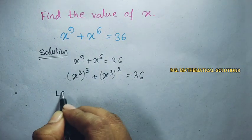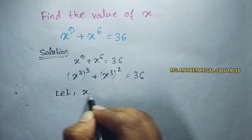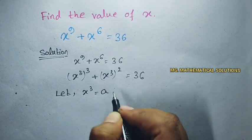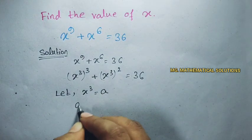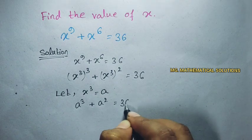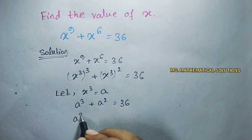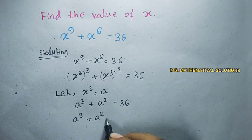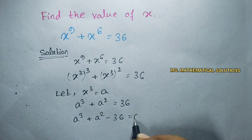Now let x cube equal to a. So the equation becomes a cube plus a square equal to 36. a cube plus a square minus 36 equal to 0.